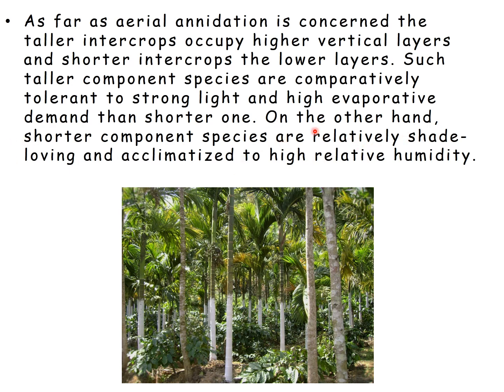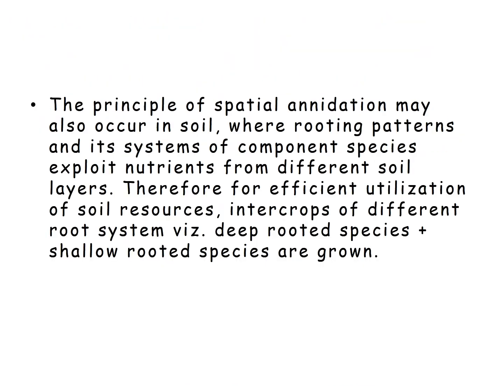On the other hand, the shorter component species are relatively shade-loving and acclimatized to high relative humidity. The principle of spatial anidation may also occur in the soil, where the rooting patterns and root systems of component species exploit nutrients from different soil layers. The taproot system can absorb nutrients from deeper soil layers, while the fibrous root system absorbs from shallower layers. Therefore, for efficient utilization of soil resources, intercrops of different root systems — that is, deep-rooted species plus shallow-rooted species — are grown together.